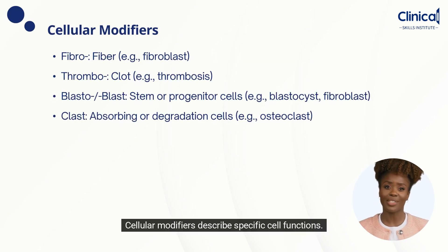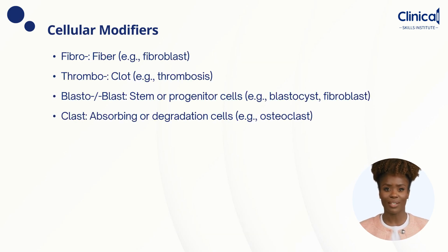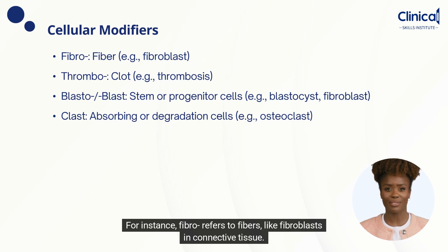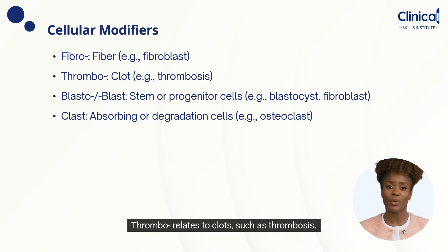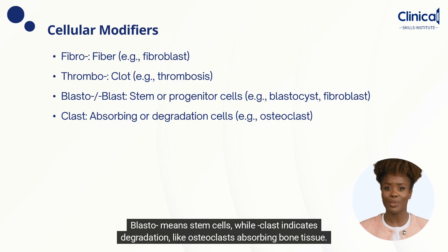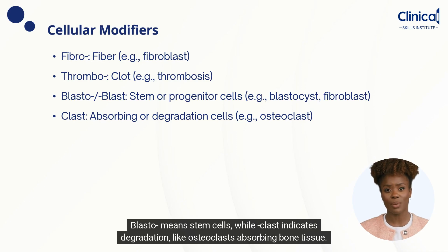Cellular modifiers describe specific cell functions. For instance, fibro refers to fibers, like fibroblasts in connective tissue. Thrombo relates to clots, such as thrombosis. Blasto means stem cells, while clast indicates degradation, like osteoclast absorbing bone tissue.